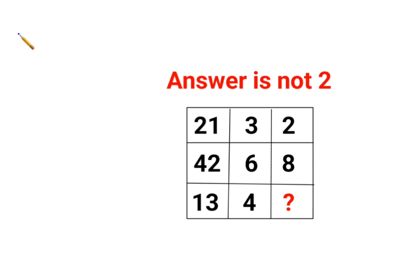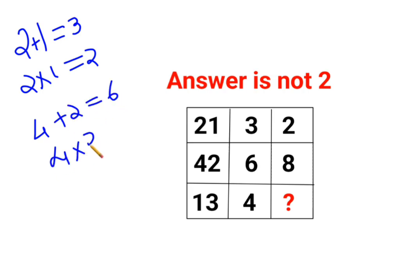So when you have something like this, let us look at it from an individual perspective. 2 plus 1 gets you 3. 2 multiplied by 1 gets you 2. Similarly, 4 plus 2 gets you 6. 4 multiplied by 2 gets you 8.